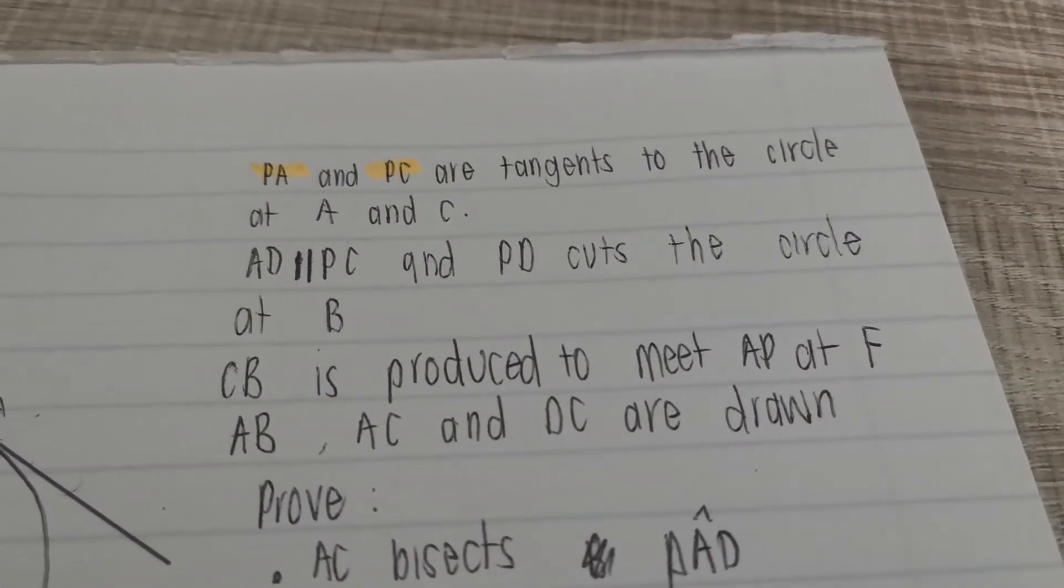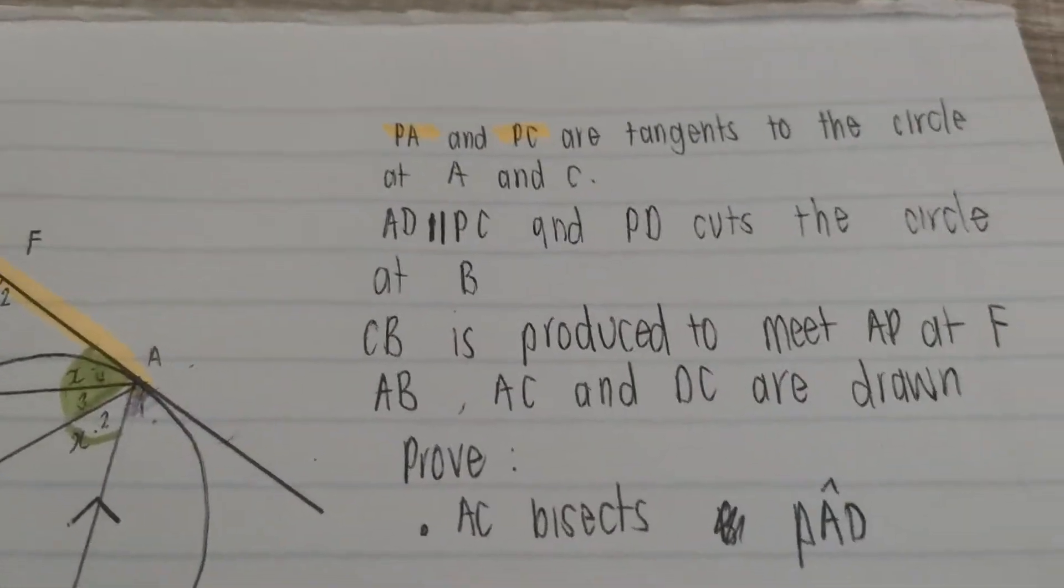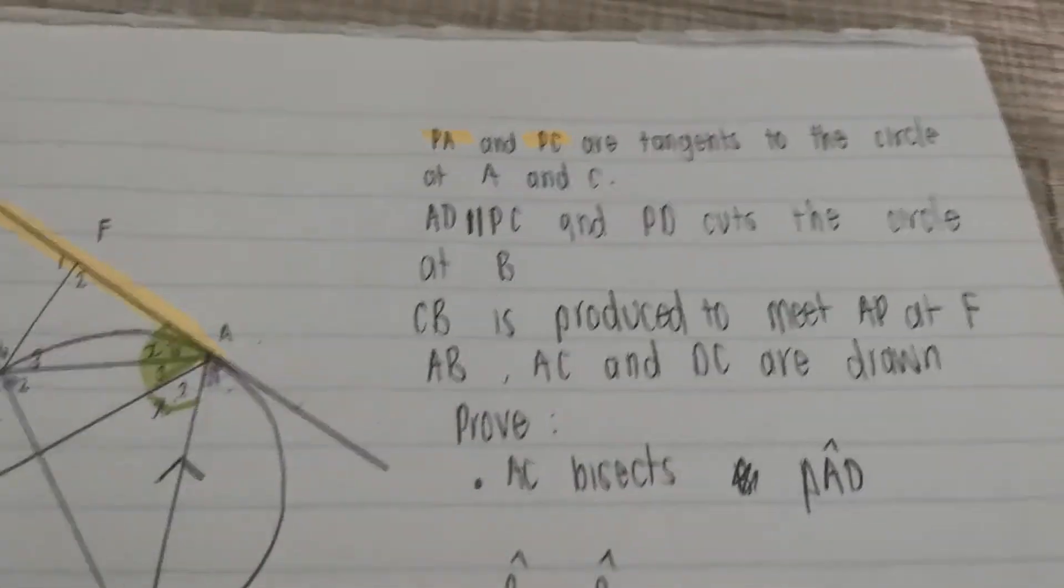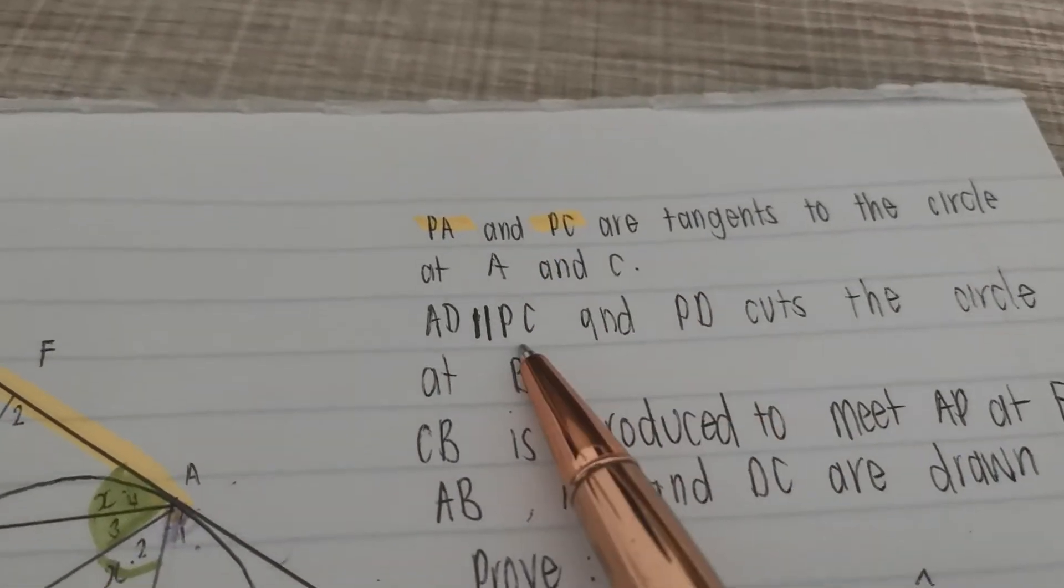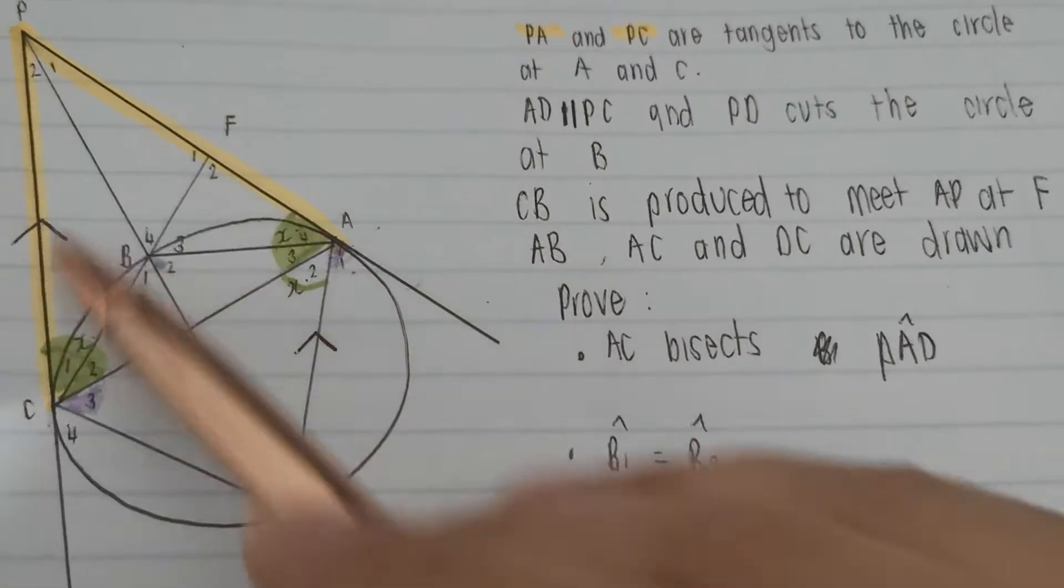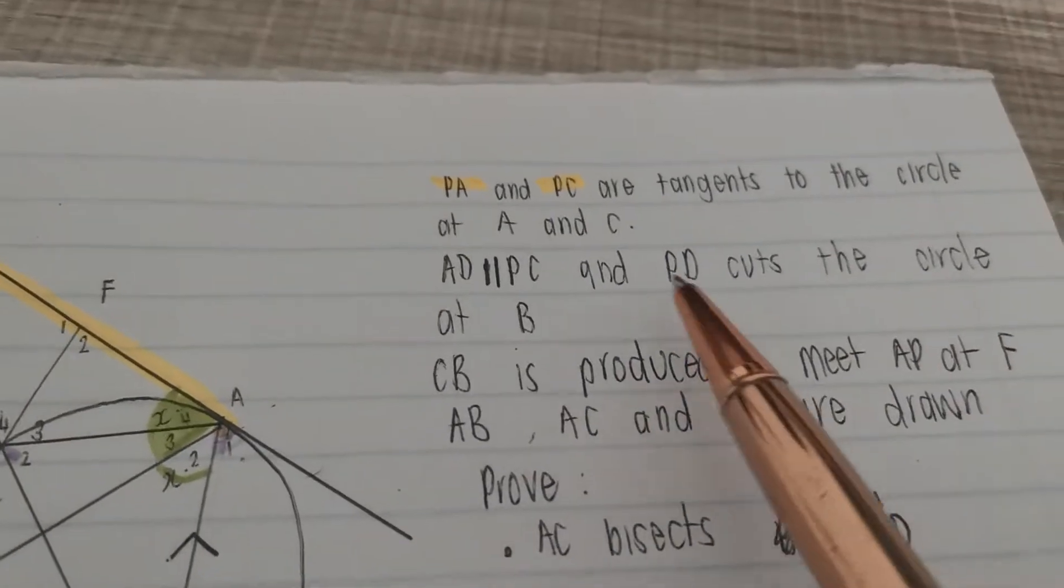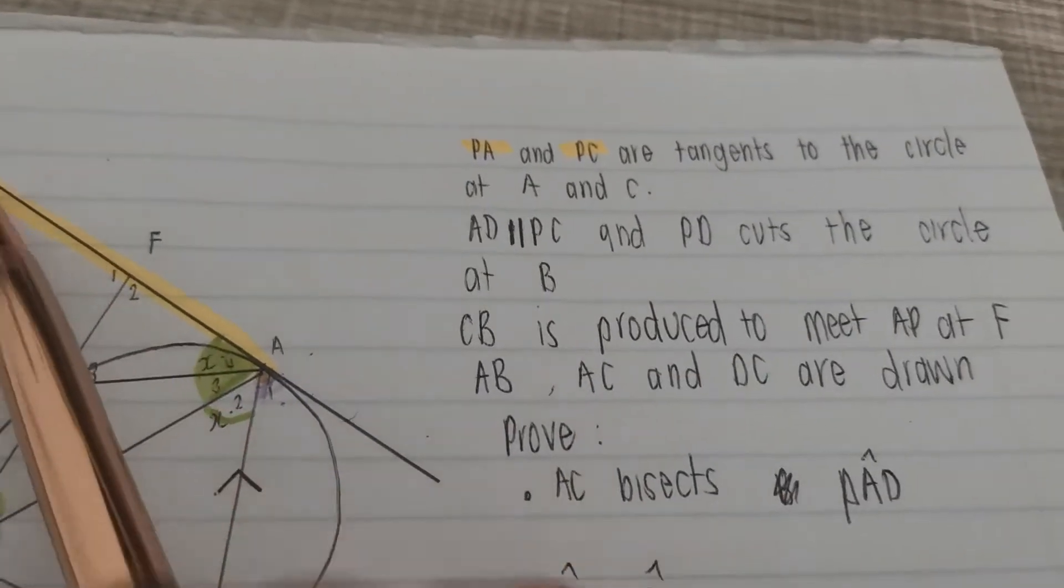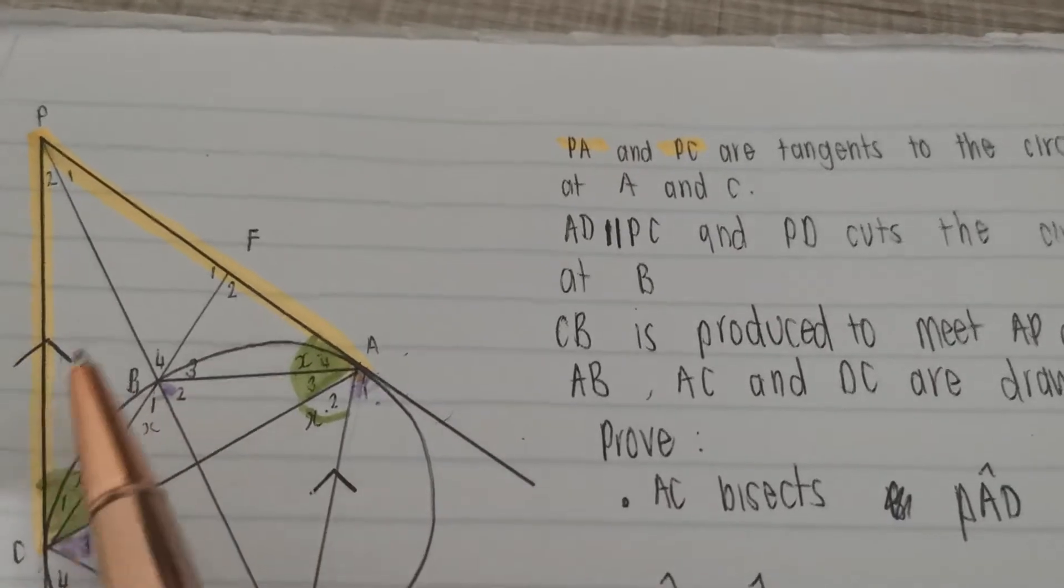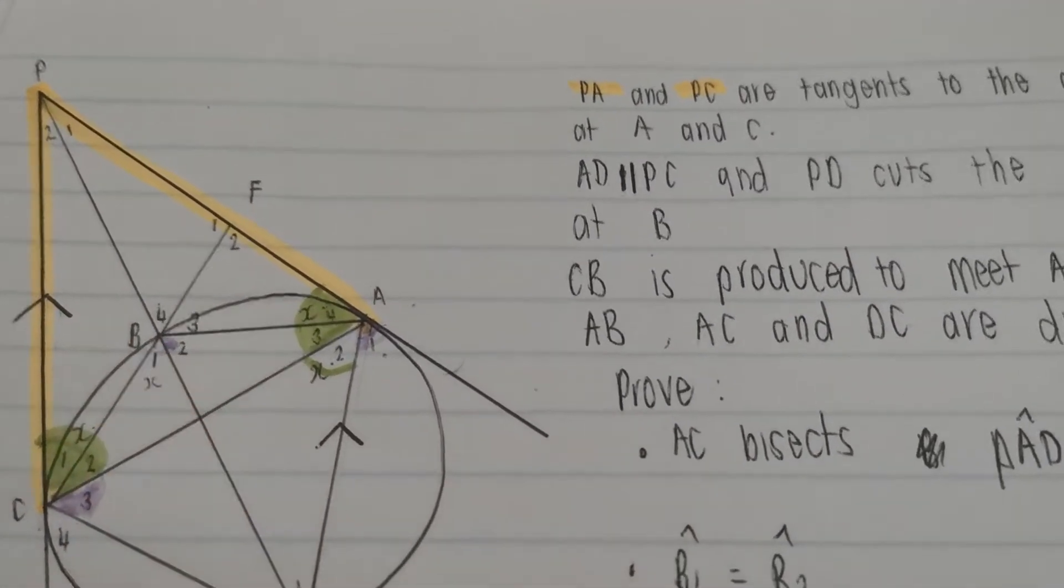It says PA and BC are the tangents, I highlighted them in orange, to the circle at A and C. It says AD is parallel to BC, I folded it in, there's AD, there's BC, this one and this one are parallel. And it says PD, which is this purple line over here, cuts the circle at B. It doesn't say that it bisects the angle, it just says that it cuts here at B, that's all.